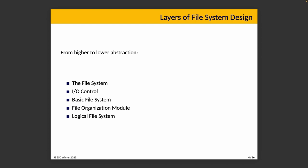Finally we have the logical file system, and this last level is for managing metadata. It has the file system structure, directory structure, and maintenance information for all of that. File data is maintained in a file control block, sometimes abbreviated FCB — the Unix term for this is an inode. It's the place where file information is stored: ownership, permissions, and also the location of the file contents.